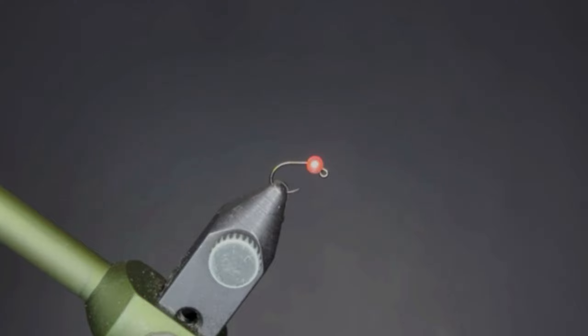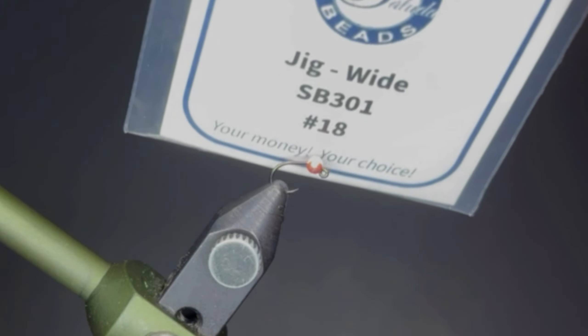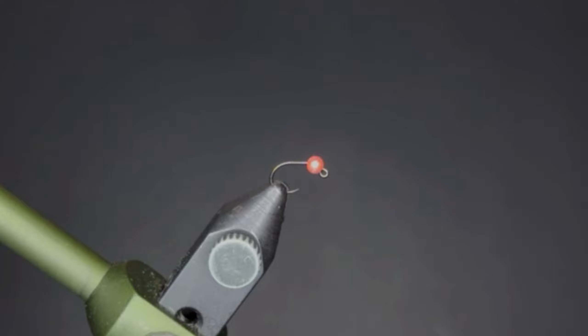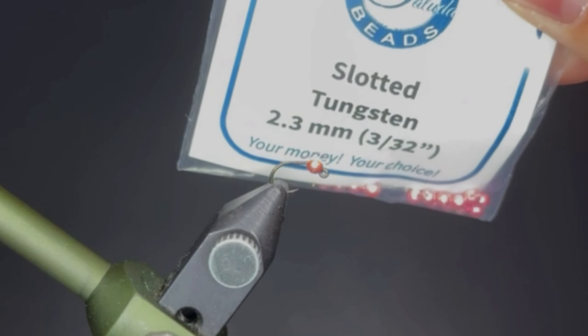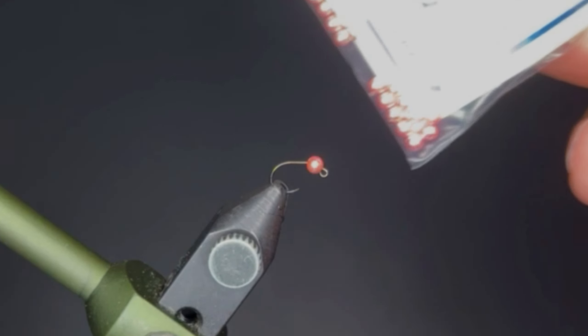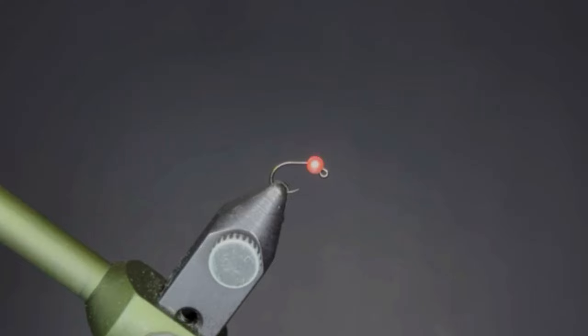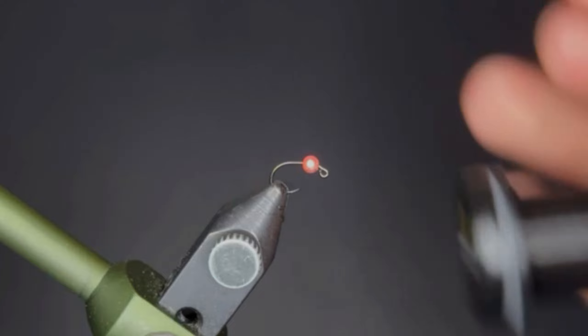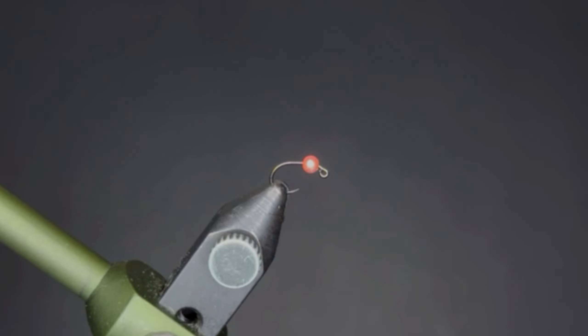Starting off with the Saluda Beads jig hook wide in size 18 and Saluda Beads 2.3 millimeter tungsten slotted bead in pink, a light pink metallic color. Using black GSP thread, mainly because I'm too lazy to swap over to brown and it won't make a big difference.